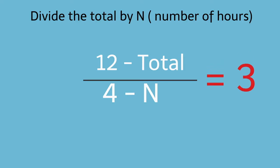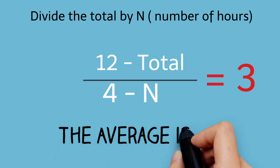12 divided by 4 equals 3. The average is 3. That's our mean.